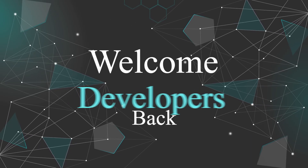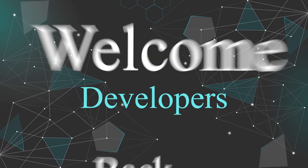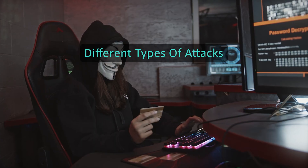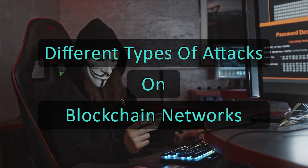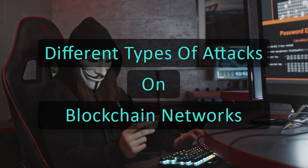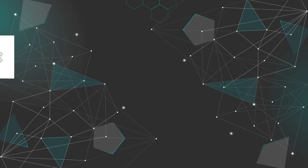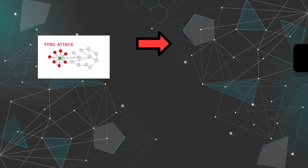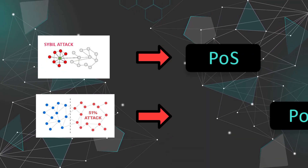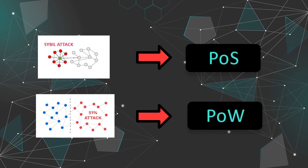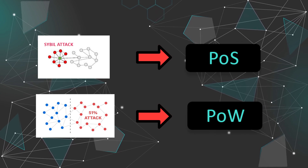Welcome back, developers. In today's video I will introduce you to the different types of attacks on blockchain consensus. One form of attack on a blockchain is directed against the consensus. The two best known are the Sybil attack for proof-of-stake and the 51% attack for proof-of-work.